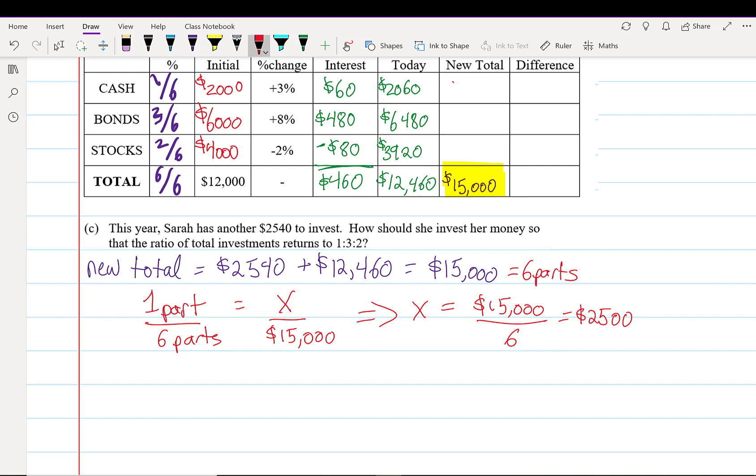That means Sarah wants to have $2,500 in cash, meaning she needs to invest an additional $440 (which is $2,500 - $2,060). She's going to invest an extra $440 in cash.